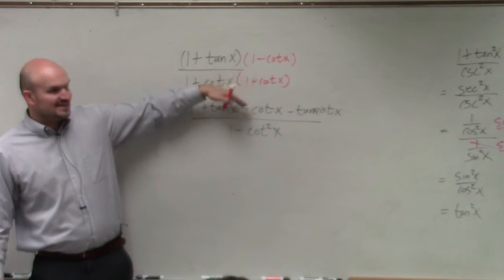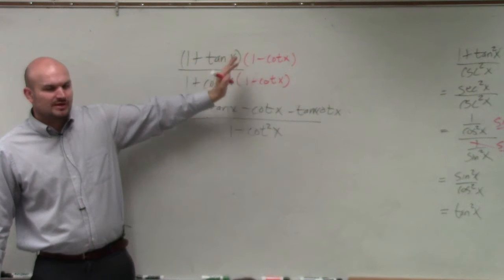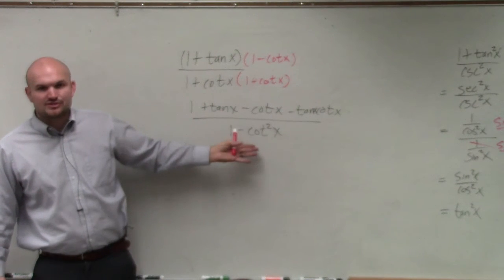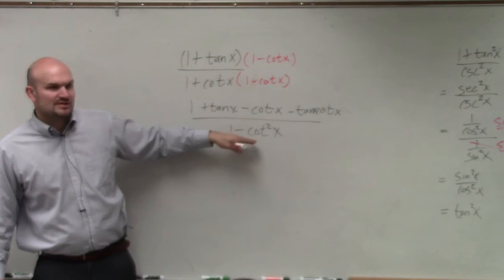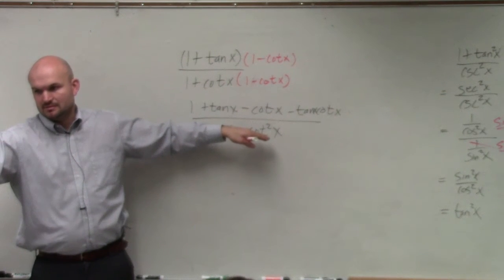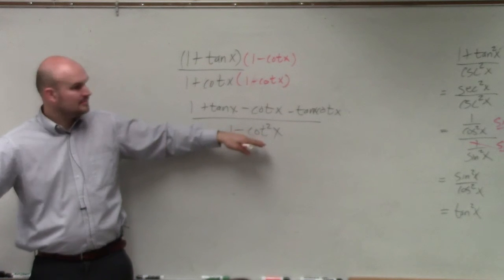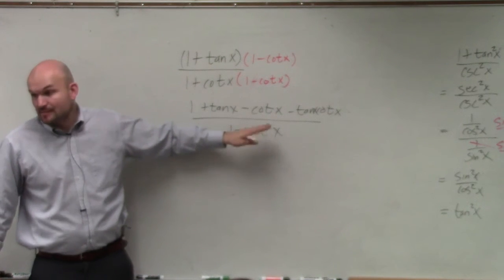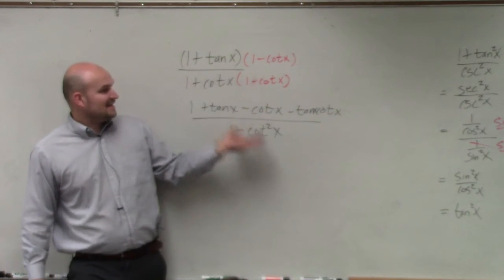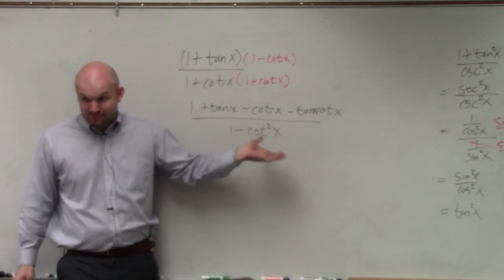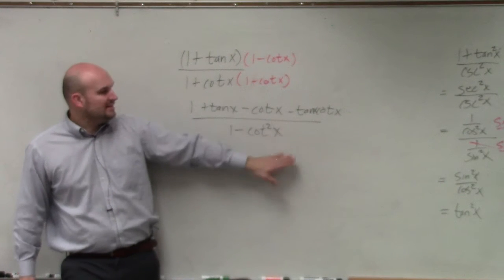However, this multiplying by the conjugate doesn't work here because 1 minus cotangent squared isn't an identity. You can't get 1 minus cotangent squared off of our identity. Can you do 1 minus cotangent and 1 plus cotangent? Yeah, and I could break that apart, and that happens a lot. That's very helpful a lot.